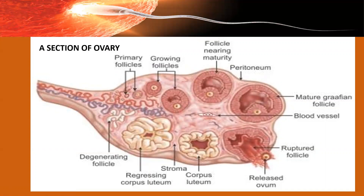Secondary follicles then develop into tertiary follicles. As they mature, a cavity starts appearing inside. In the beginning there is no cavity, but as it matures, a cavity forms inside. This maturation of the primary follicle into a mature follicle or a Graafian follicle occurs only after puberty. At the time of birth, all follicles are in the primary follicle stage, and maturation into secondary, tertiary, and Graafian stages occurs only after puberty.